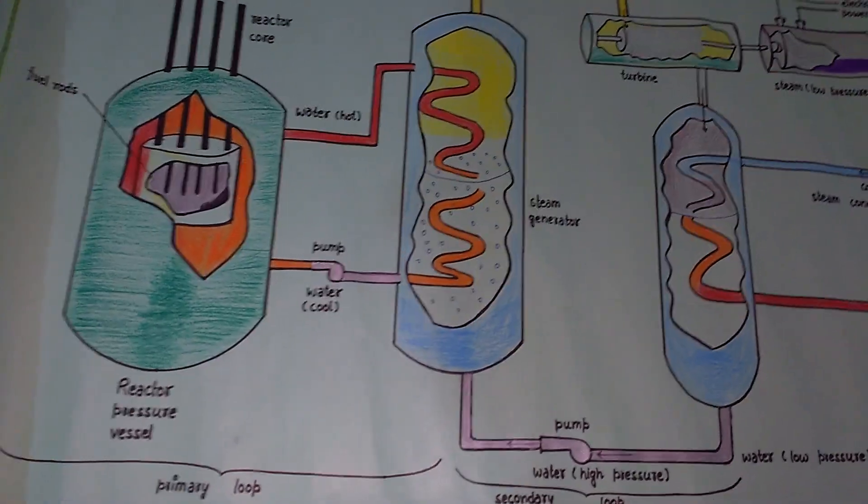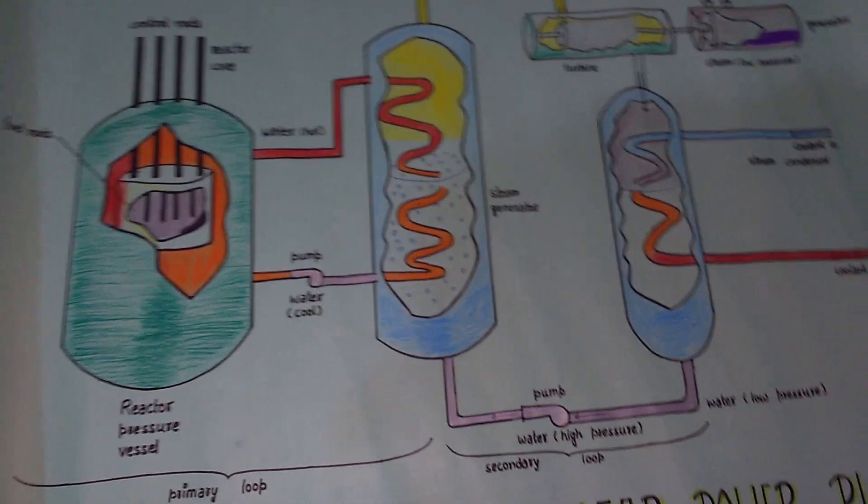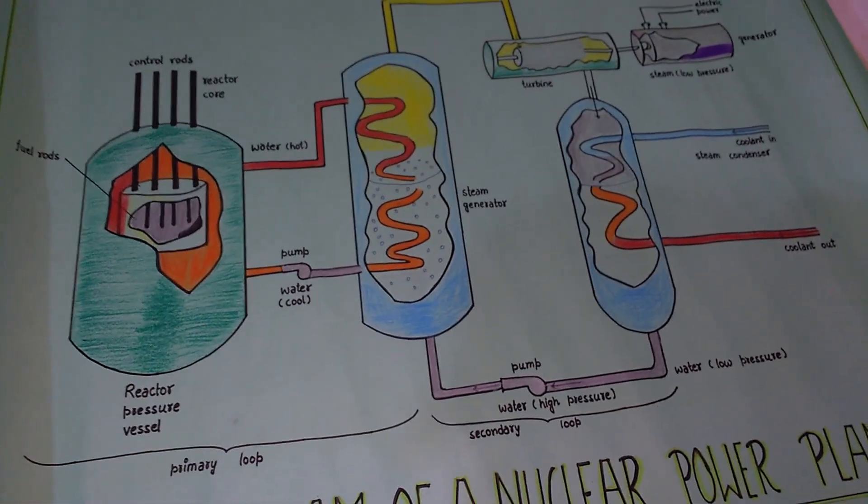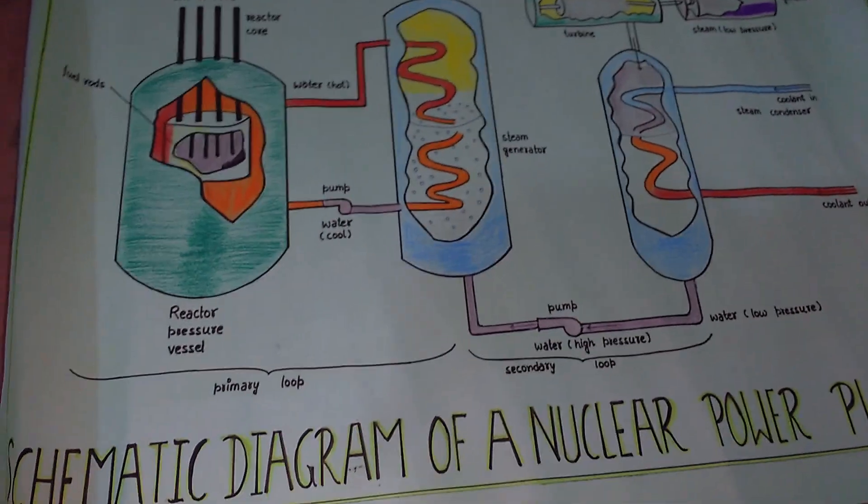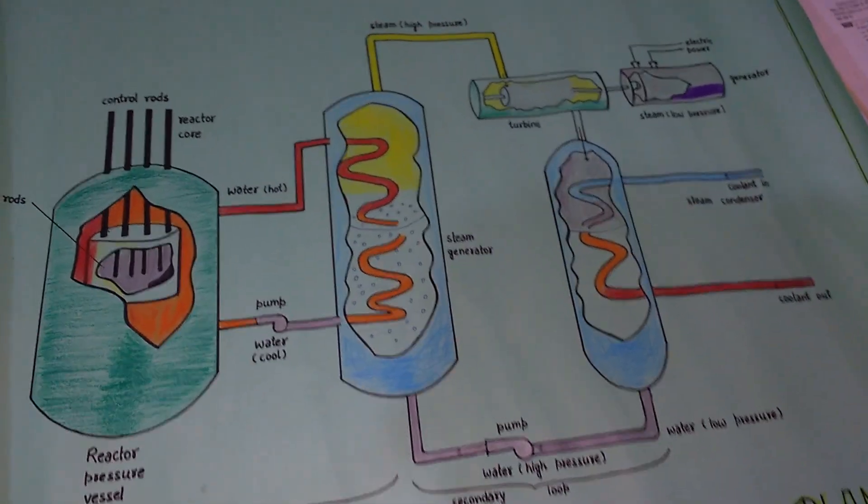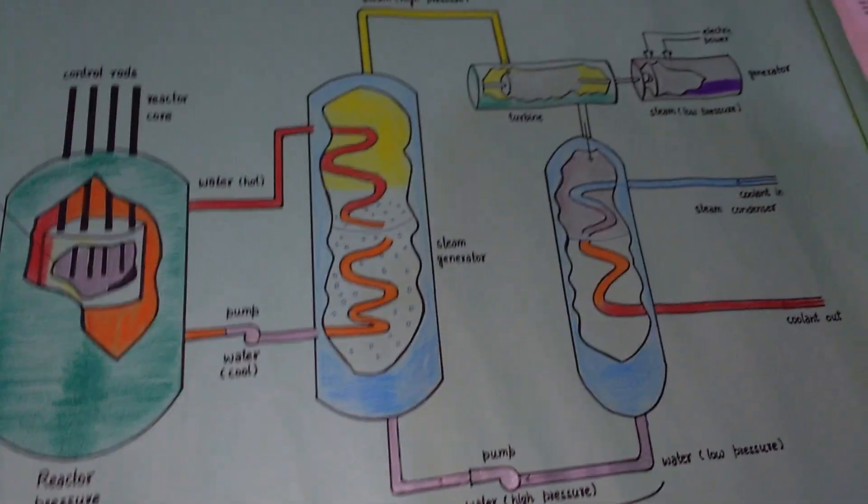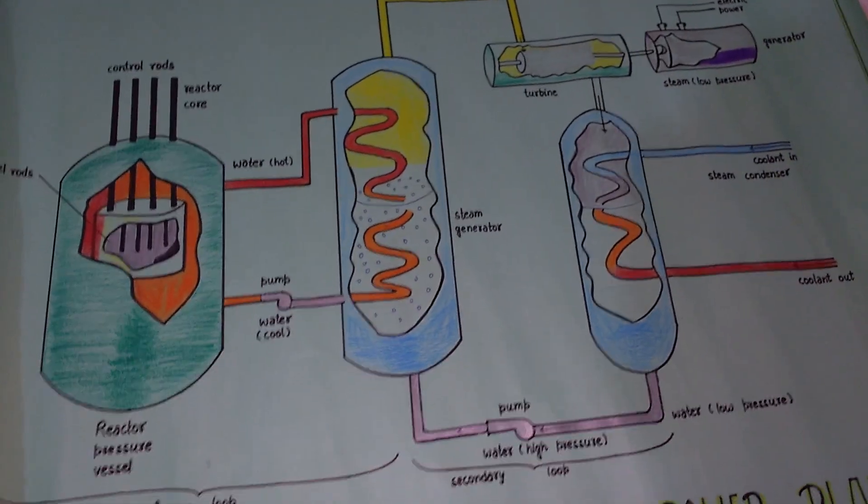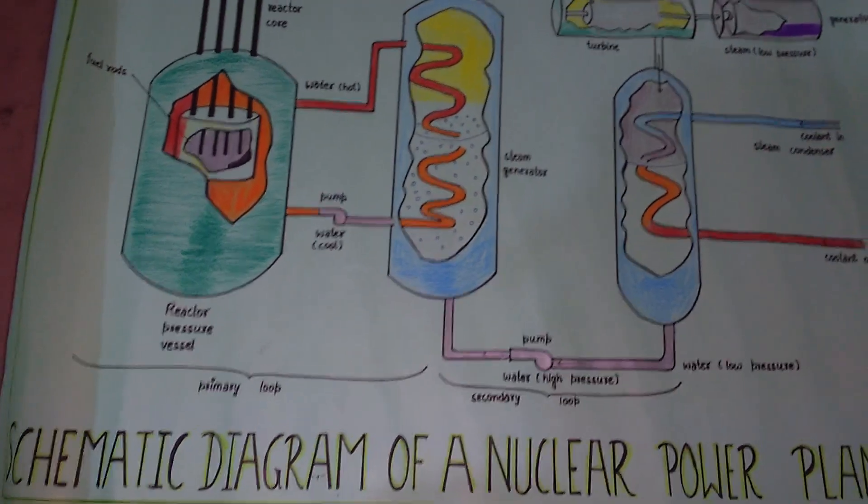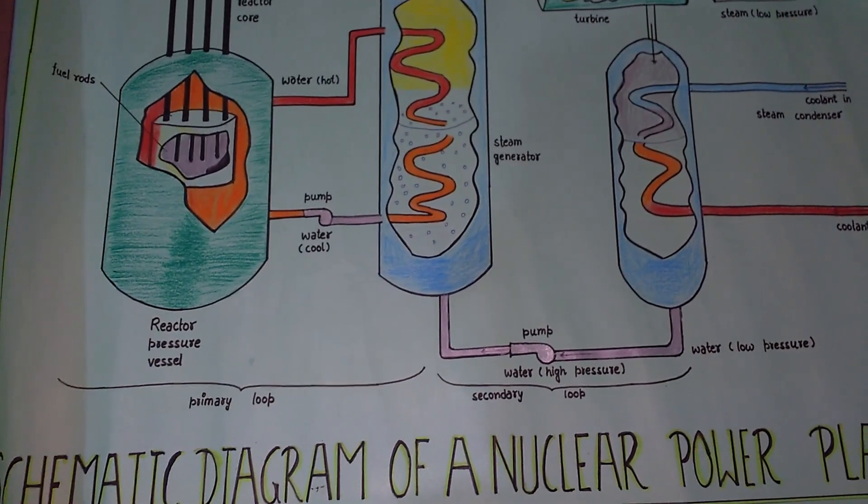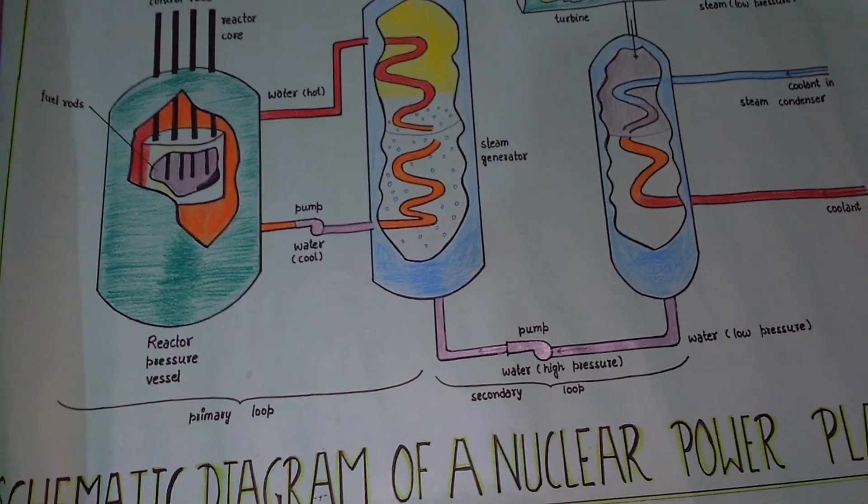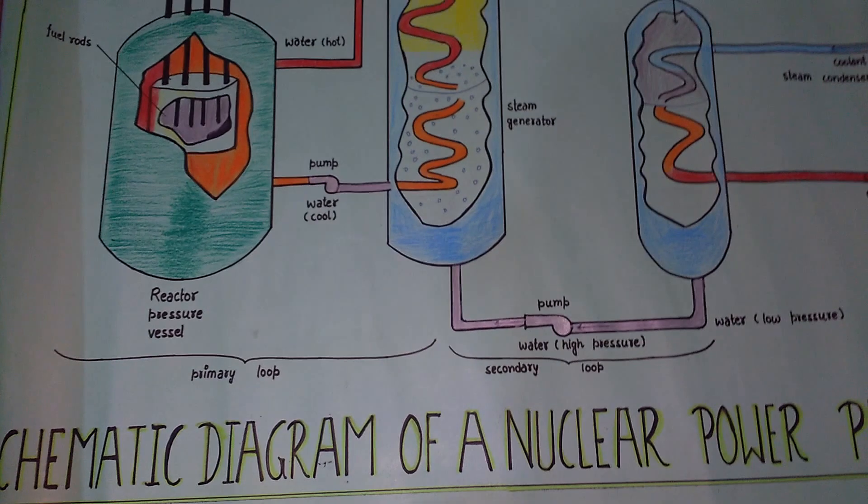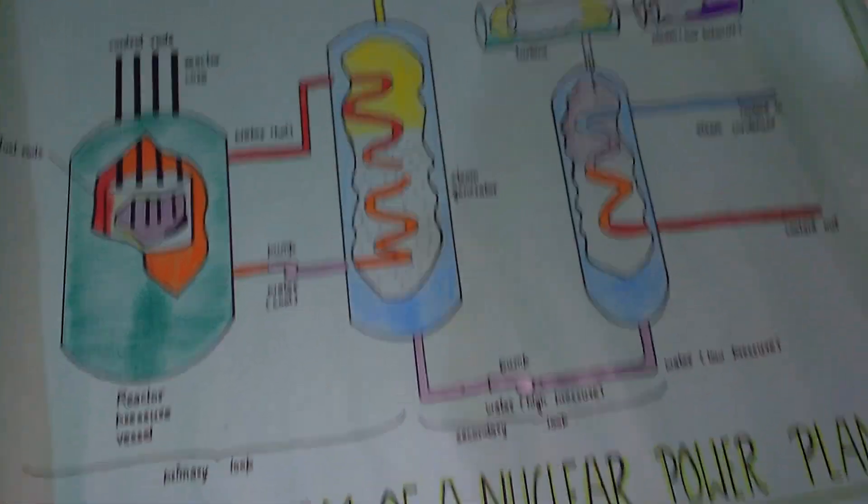The uranium-235 nucleus is much more likely to absorb a low energy neutron, less than 1 electron volt, than one of the high energy neutrons, 1 mega electron volt, that are liberated during fission. When uranium-235 is fission, the uranium nucleus is absorbed in one electron volt, rather than one mega electron volt.